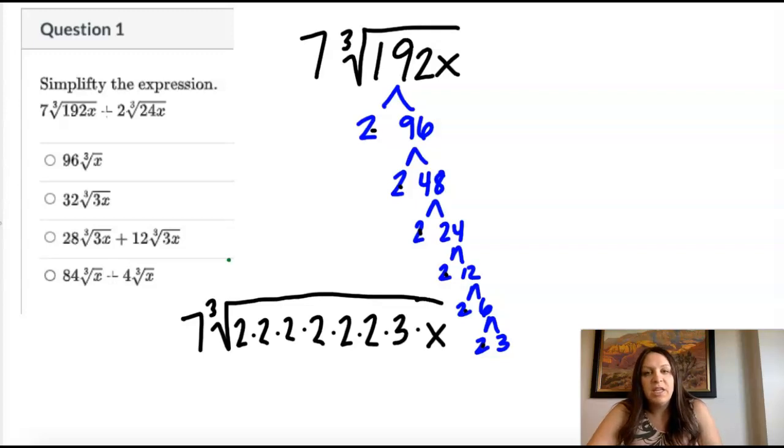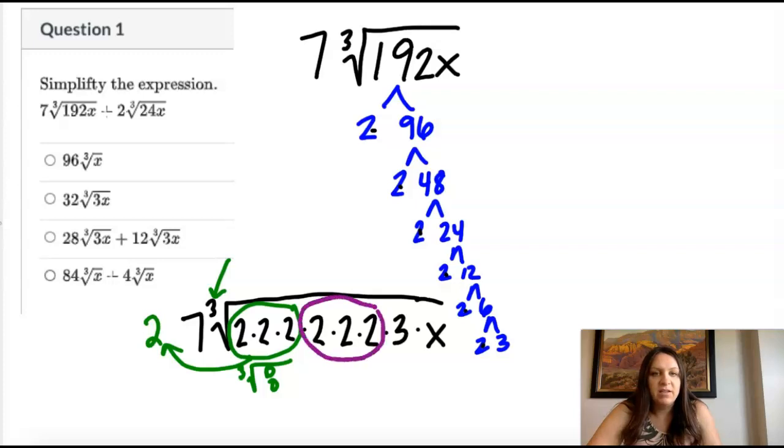So when I look at the index, that's what's telling me my groupings. So I need three twos. And when I pull that out, since that's really the cube root of eight, the answer to that is two. And I have the same thing. This is eight. If I take the cube root, I'm going to get two.